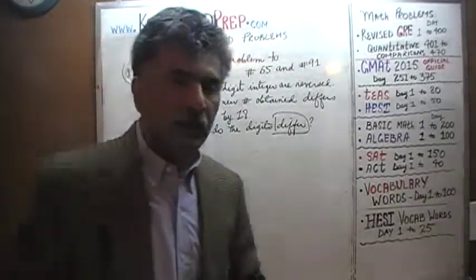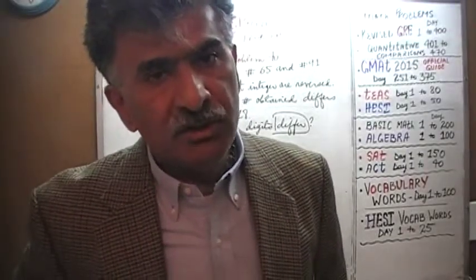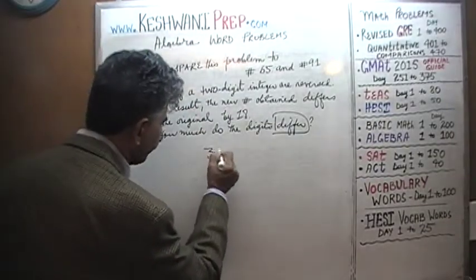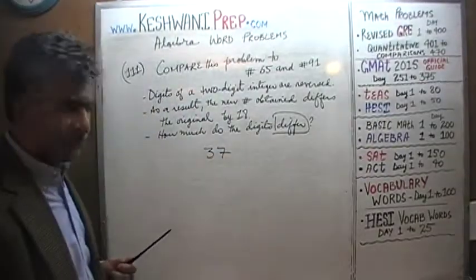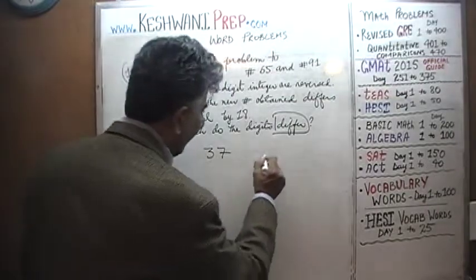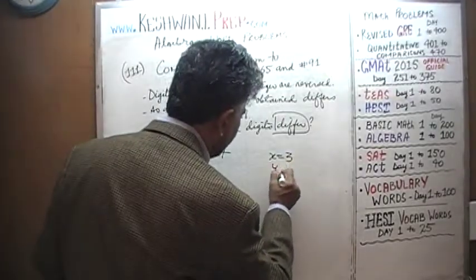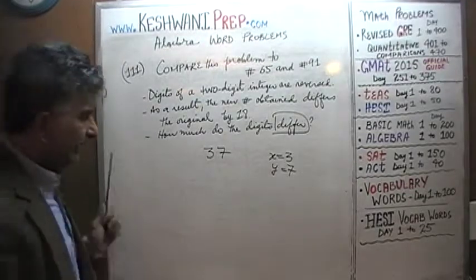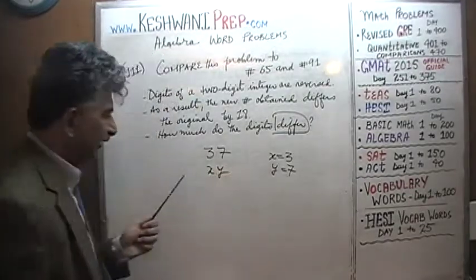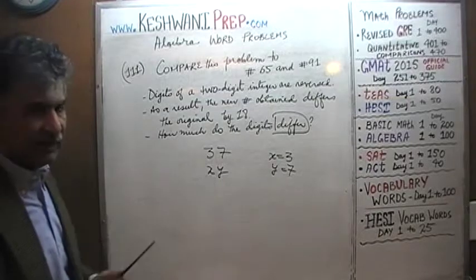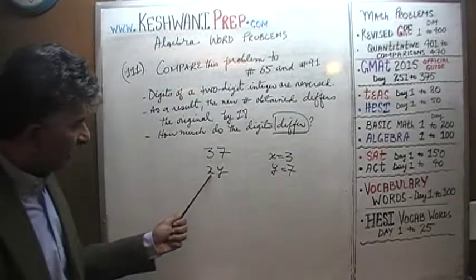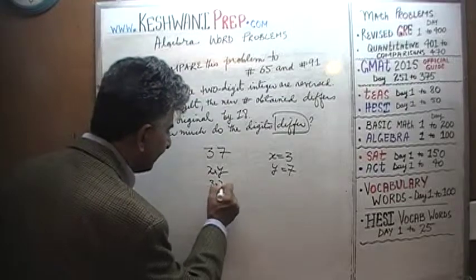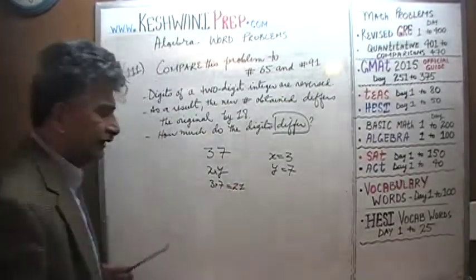That's where we learn how to express the notion of a two-digit integer. For example, let's take a look at 37. If we say that x equals 3 and y equals 7, how do we express 37? We cannot simply say xy — that's not 37. In the language of algebra, xy is simply x times y, which is 3 times 7, which is 21. It's not 37.